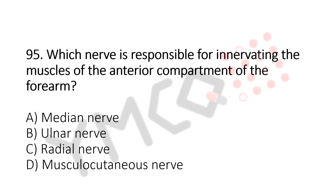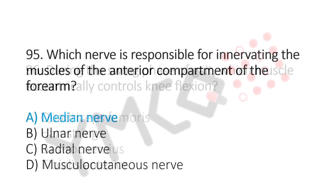Which nerve is responsible for innervating the muscles of the anterior compartment of the forearm? Option A: median nerve. Option B: ulnar nerve. Option C: radial nerve. Option D: musculocutaneous nerve. And the answer is option A, median nerve. Now let us move to question number 96.